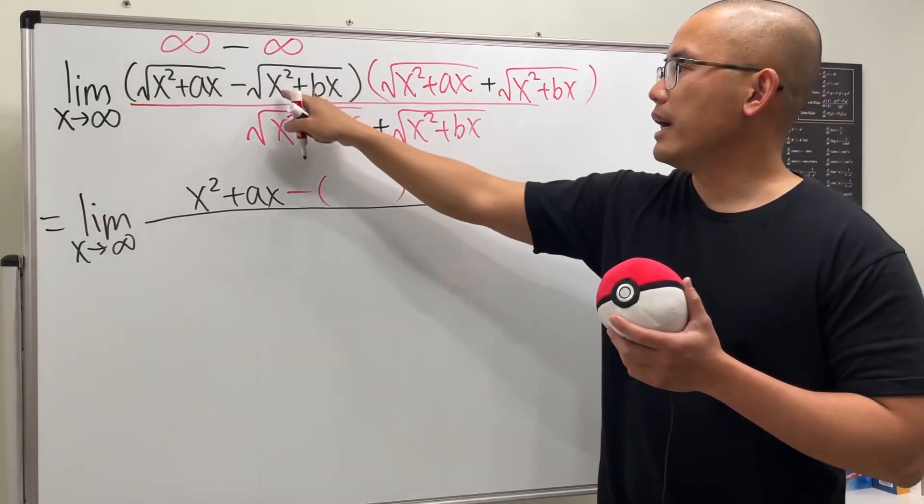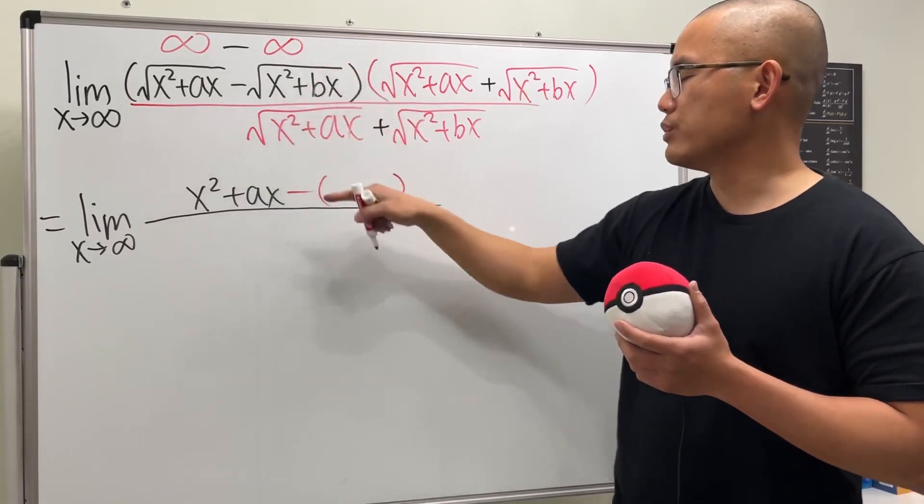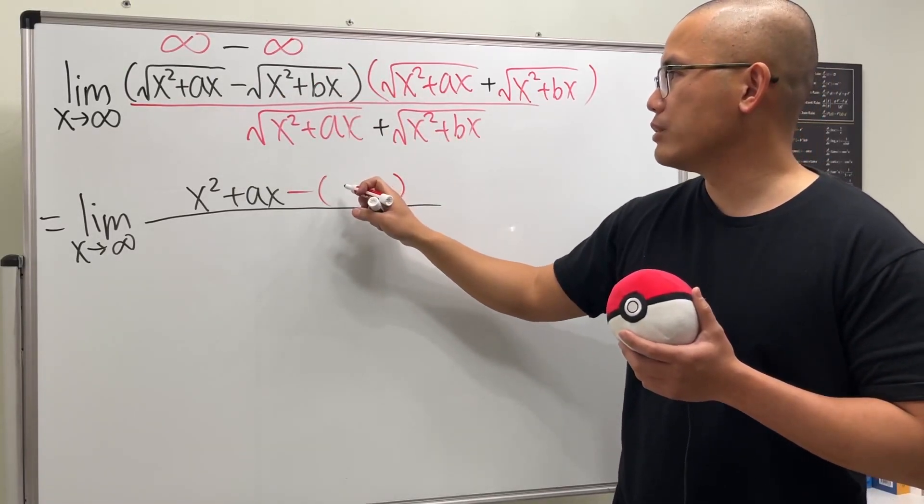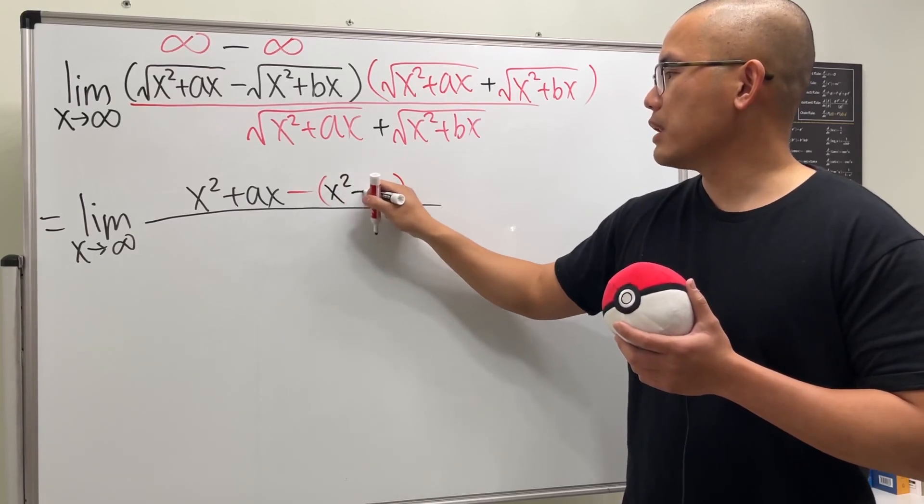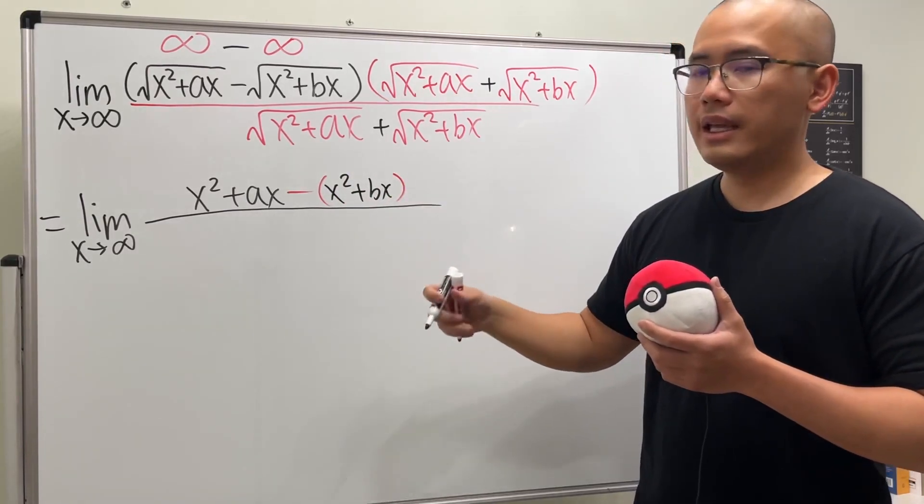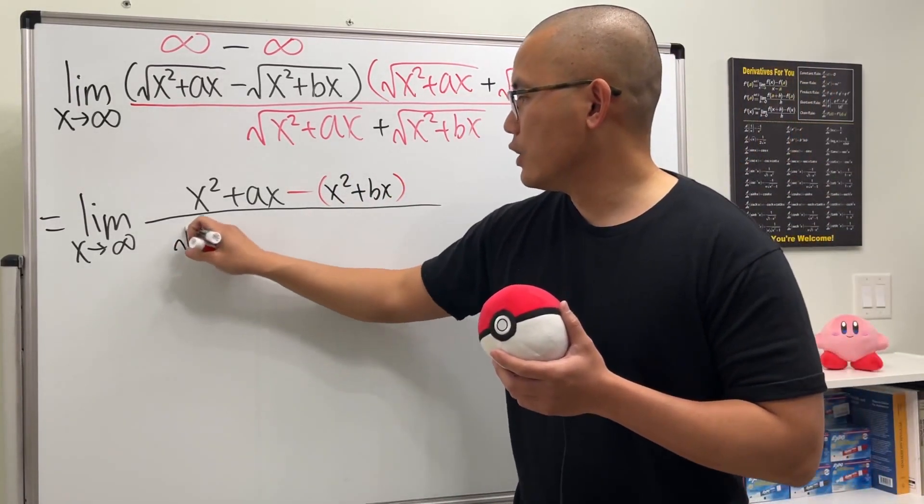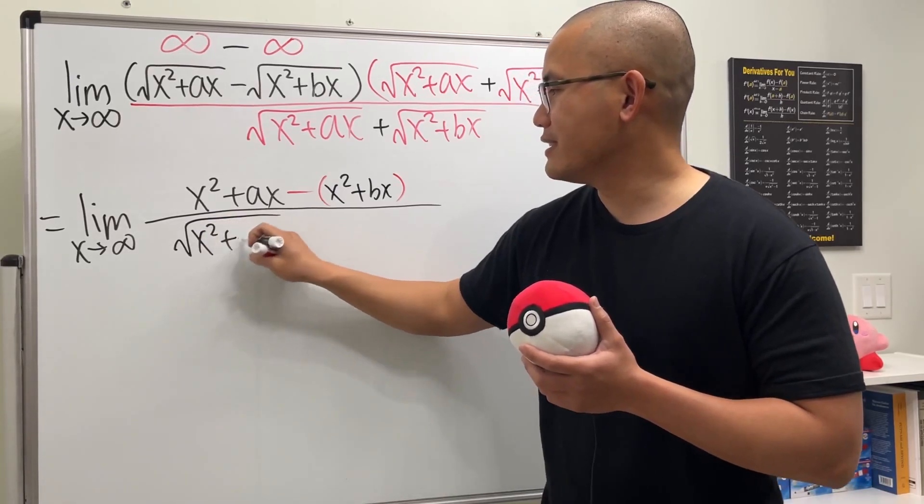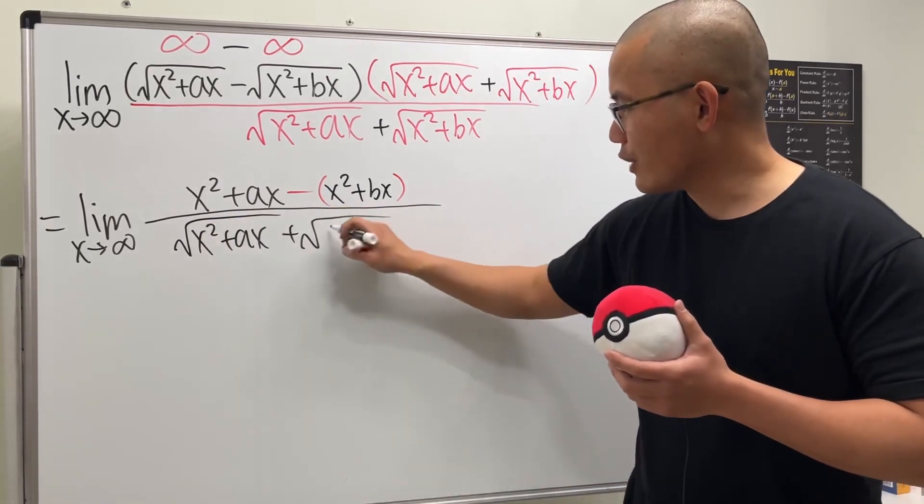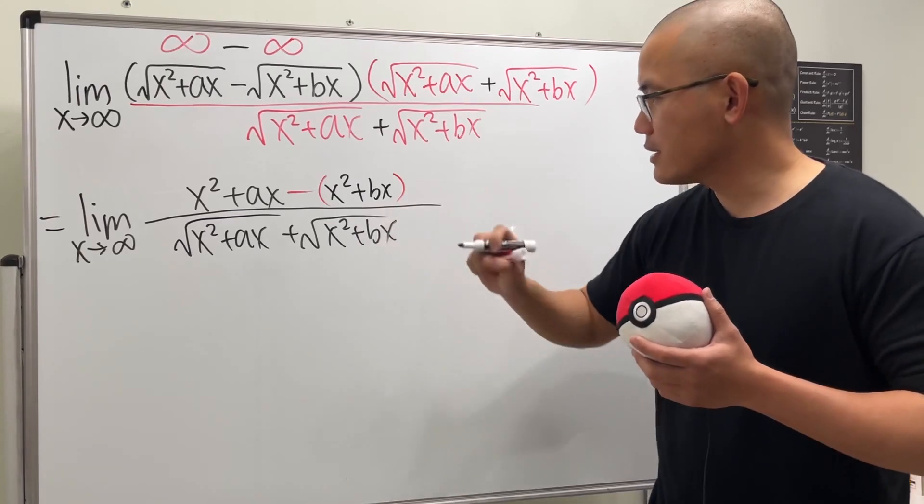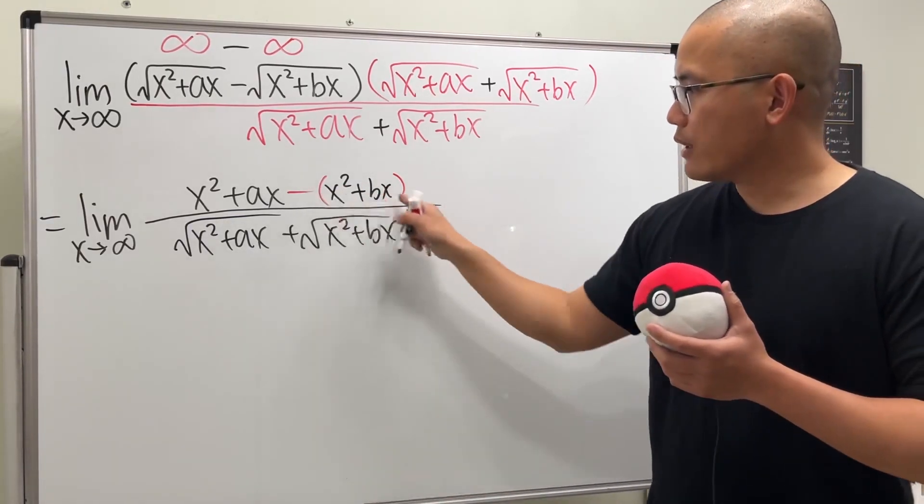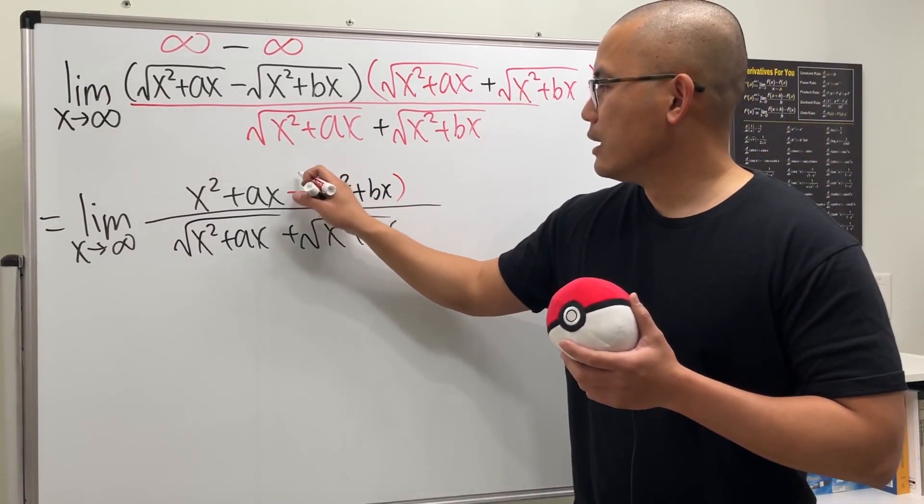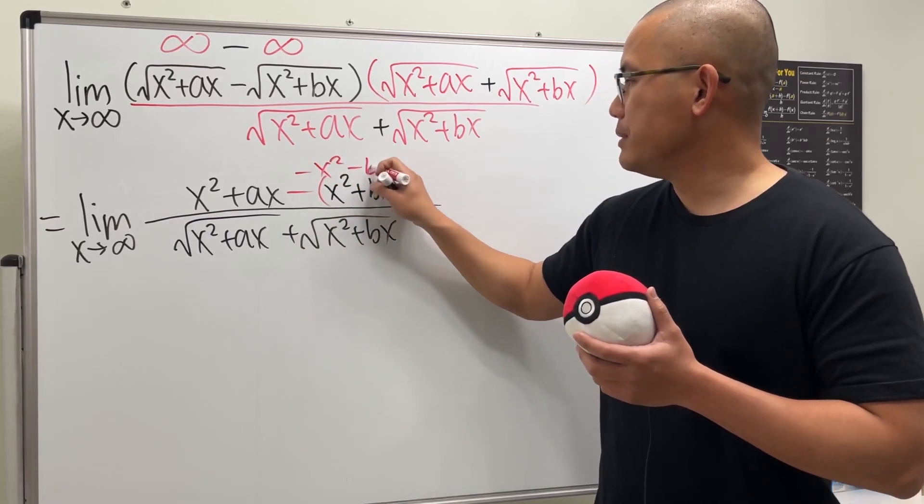We'll just put inside here—the square root and square cancel already—so we just have x squared plus bx. And then of course the bottom stays square root of x squared plus ax and then plus square root of x squared plus bx. Work out the top: this is negative x squared minus bx, and then of course this and that cancel.